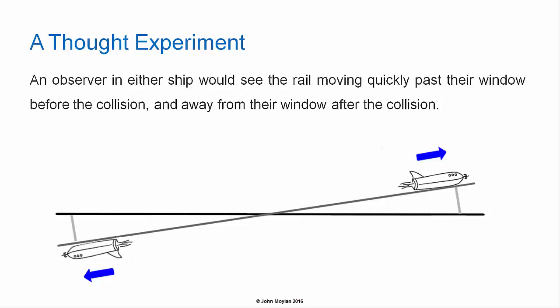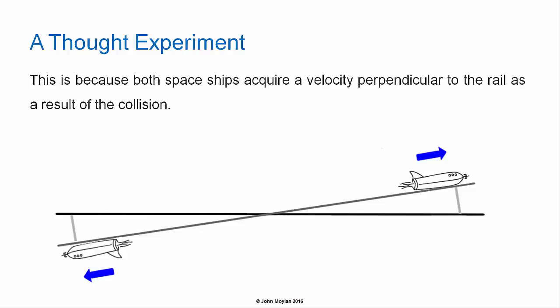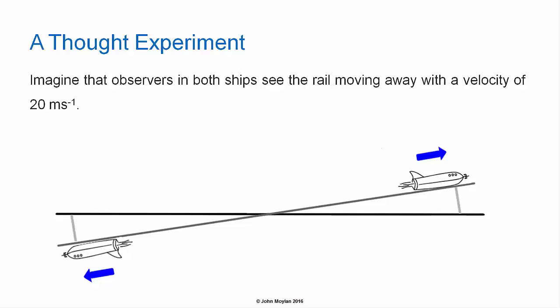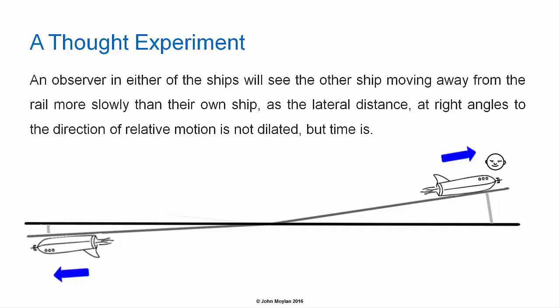An observer in either ship would see the rail moving quickly past their window before the collision, and away from their window after the collision. This is because both spaceships acquire a velocity perpendicular to the rail as a result of the collision. Imagine that observers in both ships see the rail moving away with a velocity of 20 meters per second.